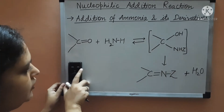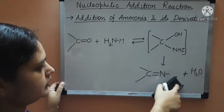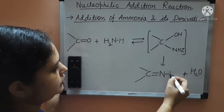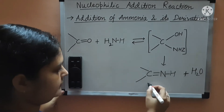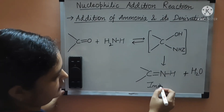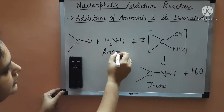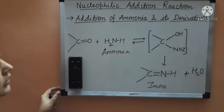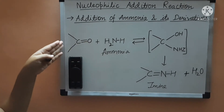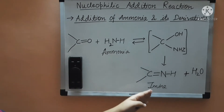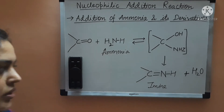The final product will also have Z equal to hydrogen. So this product is known as imine. When you are adding ammonia to the carbonyl compound — whether the carbonyl compound is an aldehyde or ketone — you will get imine as the product, in which carbon and nitrogen are doubly bonded to each other.